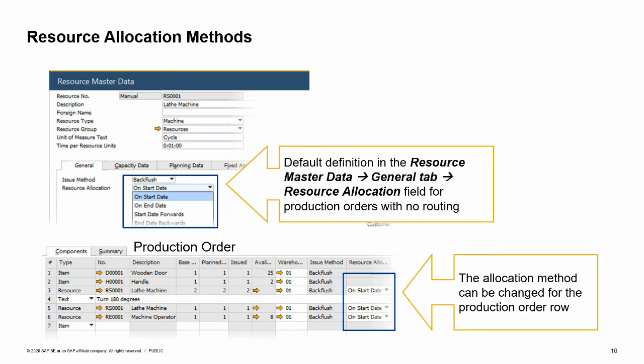We saw that the Resource Capacity window has a column for each day in the specified range. In each day column, we can see the internal, committed, consumed, or available quantities. The system allocates the committed quantity, derived from production orders, according to the start or end date of the production order rows.